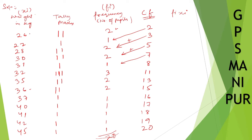So 26 into 2 is 52. 27 into 1 is 27. 28 into 2 is 56. 30 into 2 is 60. 31 into 1 is 31. 32 into 3 is 96. 35 into 2 is 70. 36 into 2 is 72. 37 into 1 is 37. Then 40, 41, 42, and 45. So this is fi xi and we are going to add all these things.